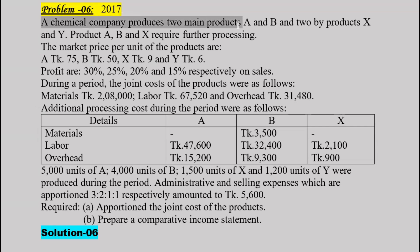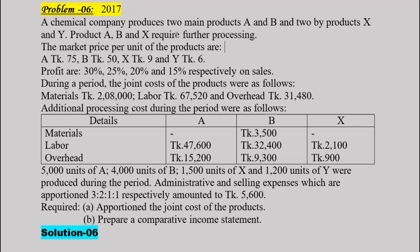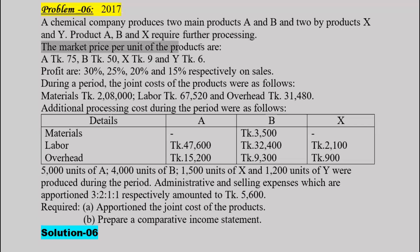A chemical company produces two main products A and B, and two by-products X and Y. Products A, B, and X require further processing. The market price per unit: product A is 75, product B is 50, product X is 90, and product Y is 6.